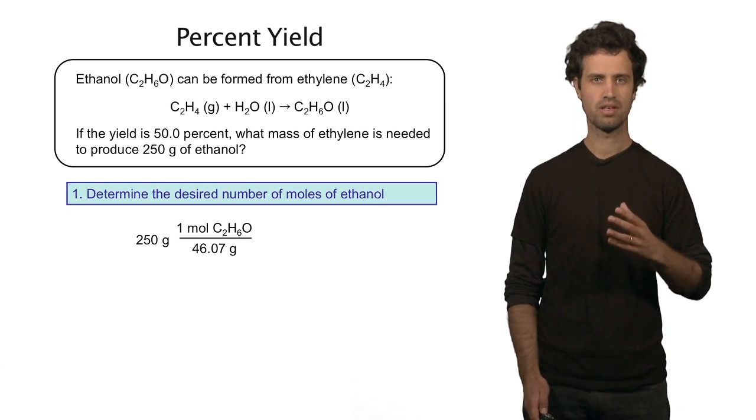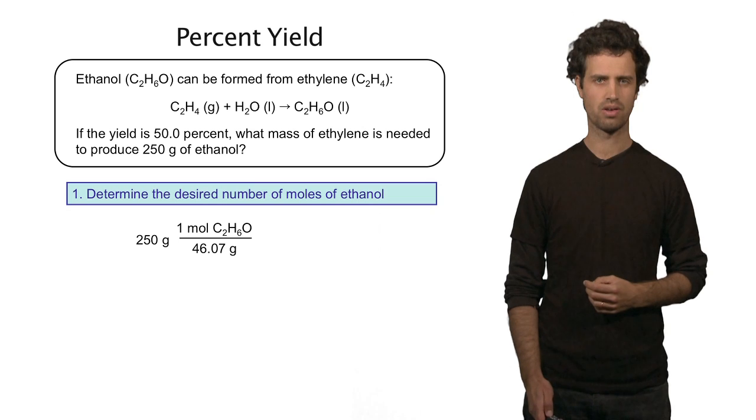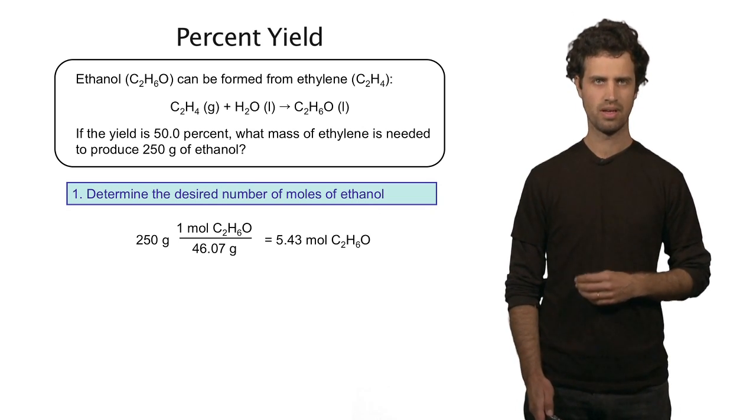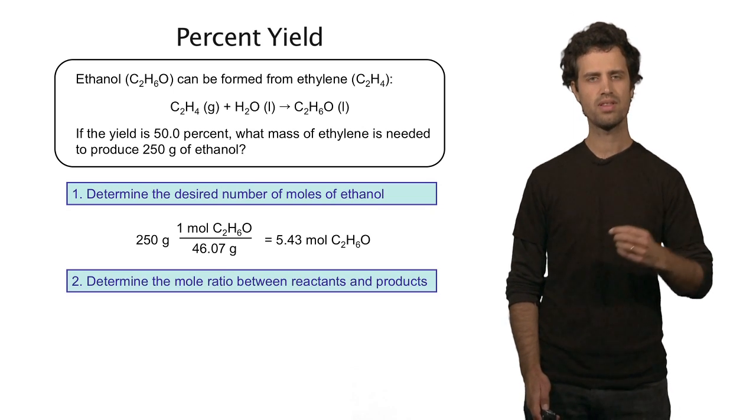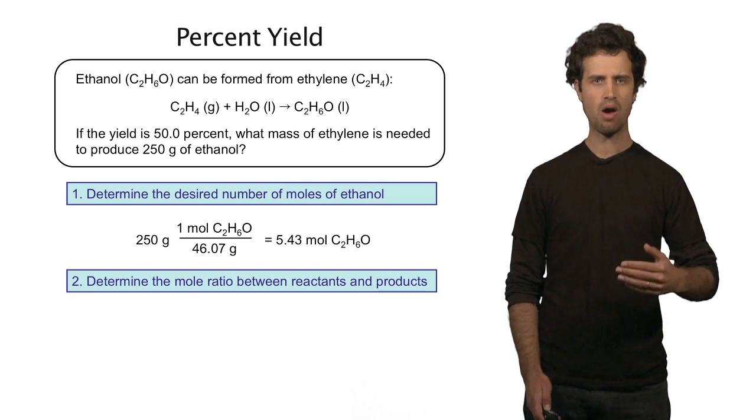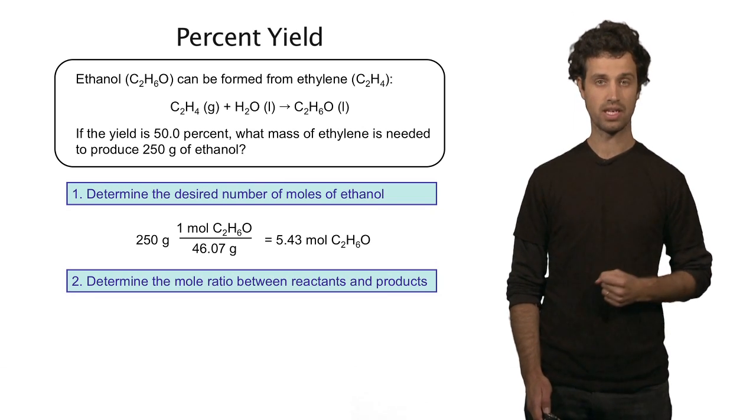That is 250 grams divided by the molar mass of ethanol, and that is a total of 5.43 moles of ethanol. Now, given this, and assuming that I have 100% yield, how many moles of ethylene do I need? So I have to look at a mole ratio. The mole ratio is 1 to 1.